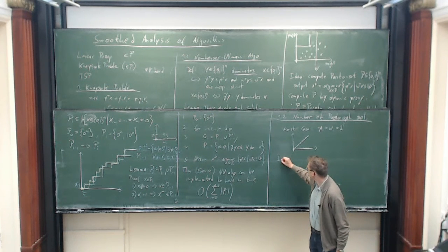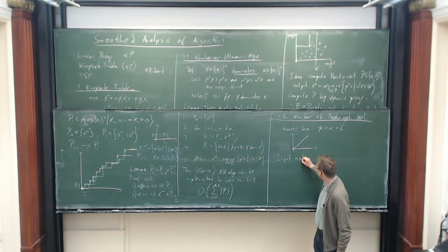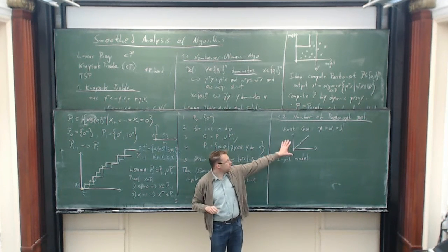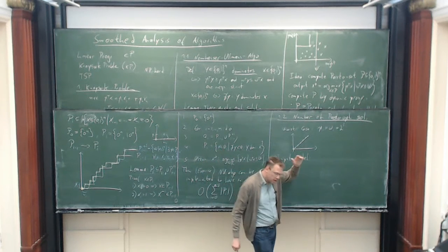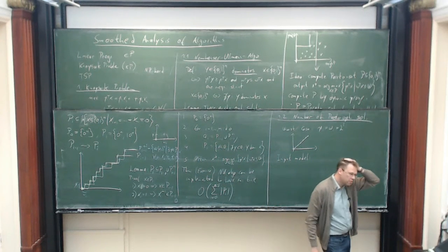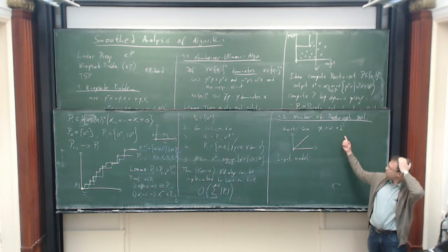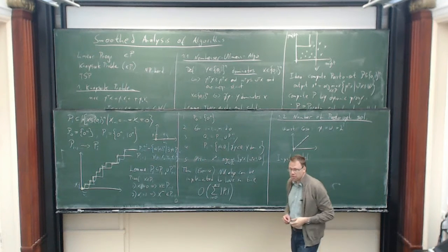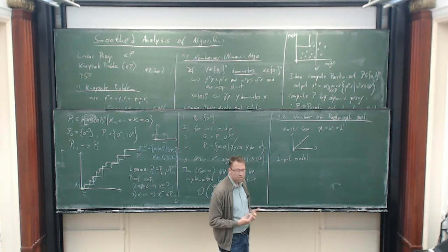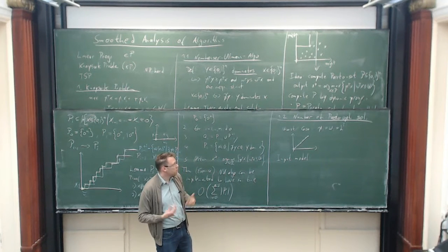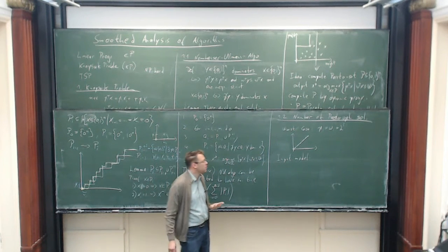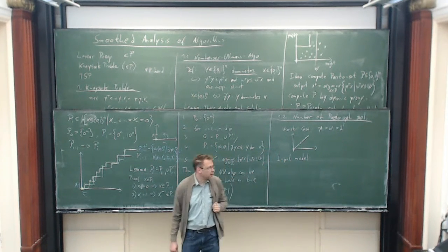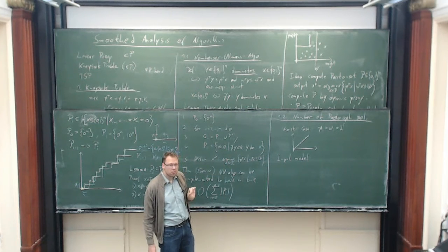Let me take some time to introduce the input model that we consider. If you think about classical worst-case analysis, this is like playing a game against an adversary: you're the algorithm designer, and the adversary picks an input. The adversary wants to find an input where the algorithm takes as much time as possible. Somehow this adversary seems too powerful, since he can specify instances which do not seem to be realistic. So we want to take some power away from the adversary.